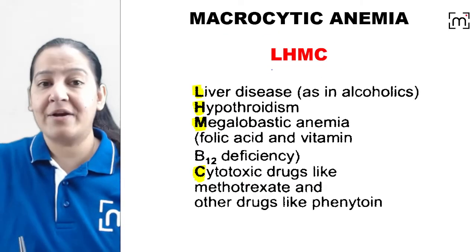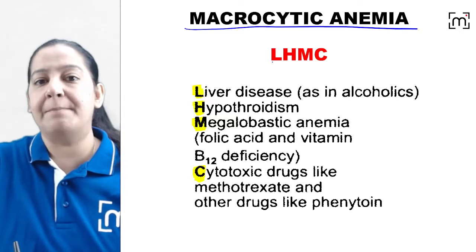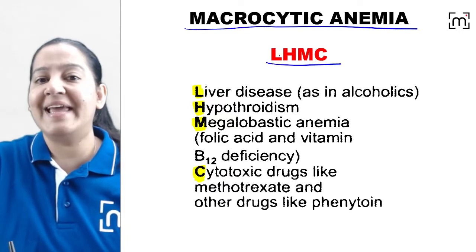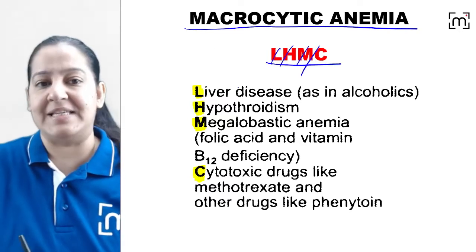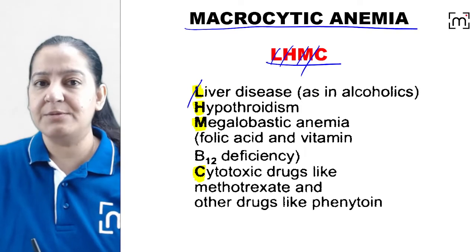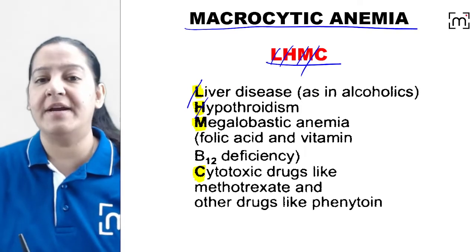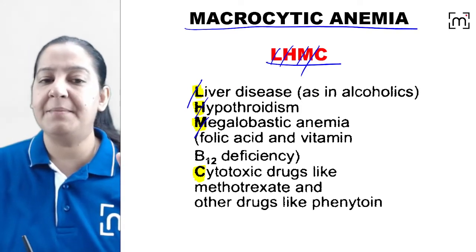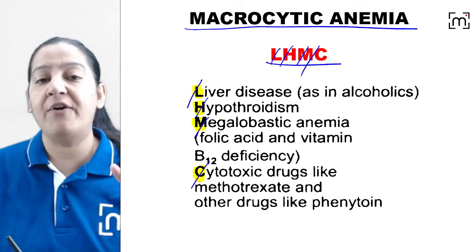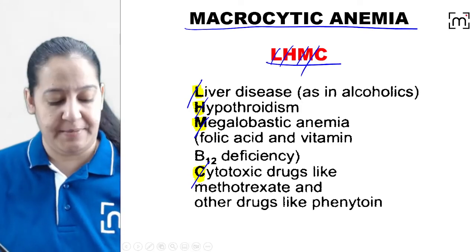Now for macrocytic anemia, again there are 4 examples. The mnemonic is LHMC — Lady Harding Medical College. L stands for liver diseases, H for hypothyroidism, M for megaloblastic anemia, and C for cytotoxic drugs anemia.